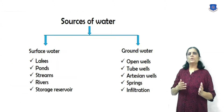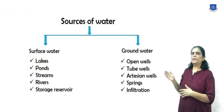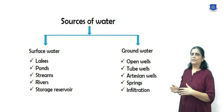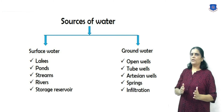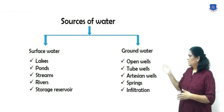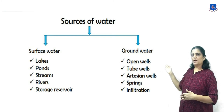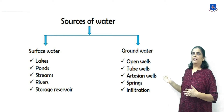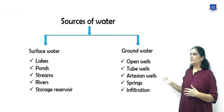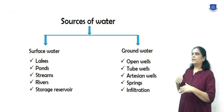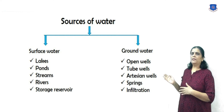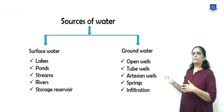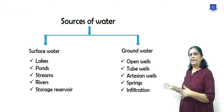Now, sources of water. There are two types of water sources available on earth: surface water and groundwater. Surface water includes lakes, ponds, streams, rivers, and storage reservoirs. Groundwater includes open wells, tube wells, artesian wells, springs, and infiltration water.